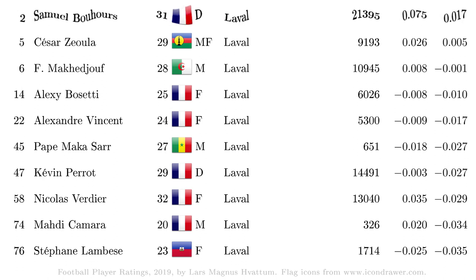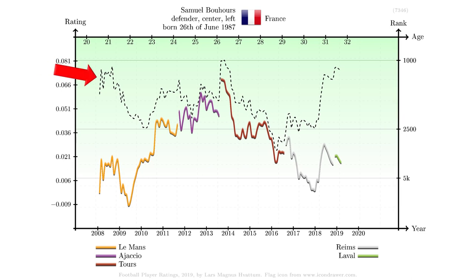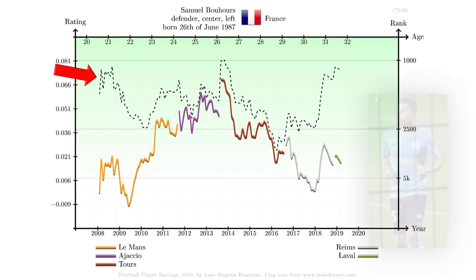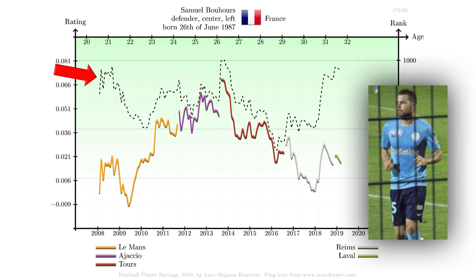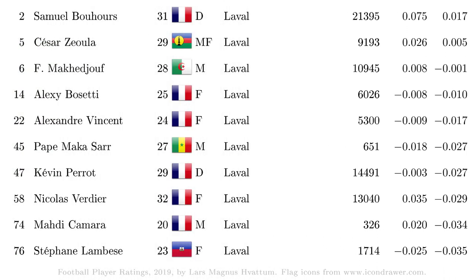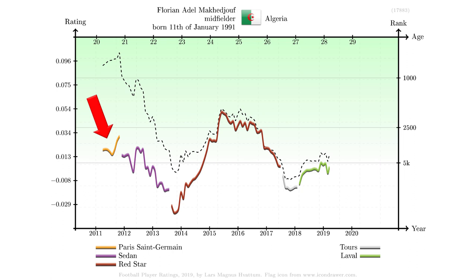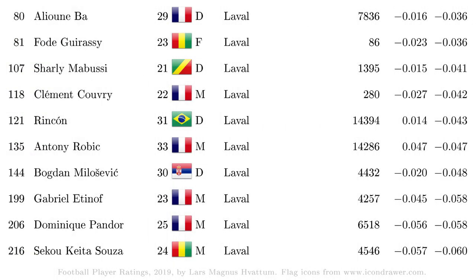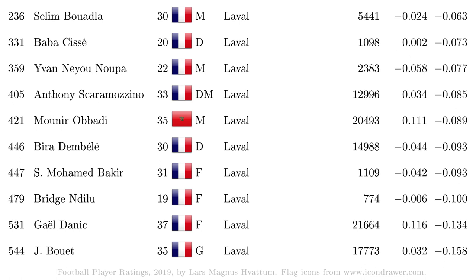The highest rated player is Samuel Bouhou. His peak rating is quite decent, but as we will see, most of the players on Laval with a decent peak rating are in their 30s, and accordingly their peak is in the past rather than in the future. Makhedjov has played for PSG and seems to have obtained good results with Red Star for some time. Here we have the players ranked 11 to 20 on Laval — no goalkeeper among the top 20. And here are the final 10 players on the list for Laval — finally a goalkeeper!